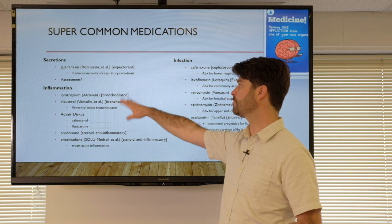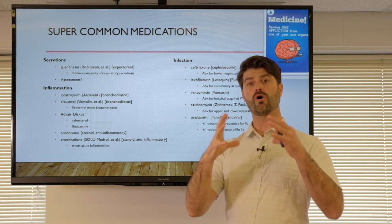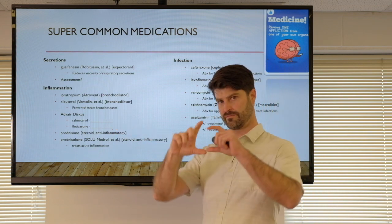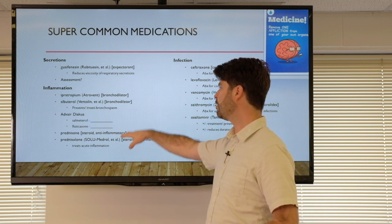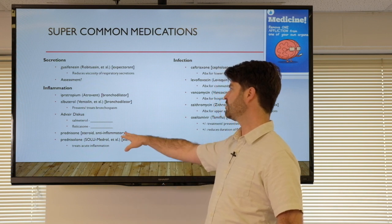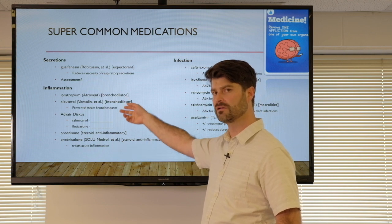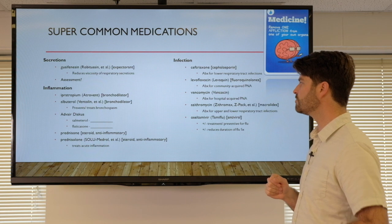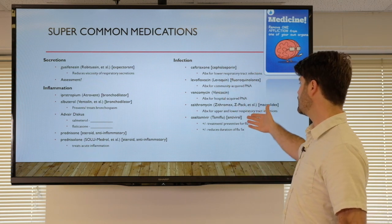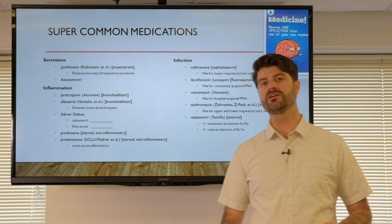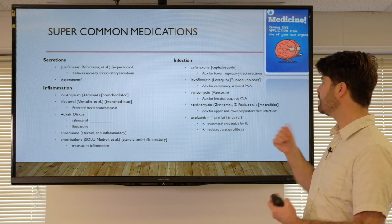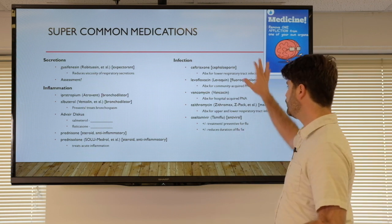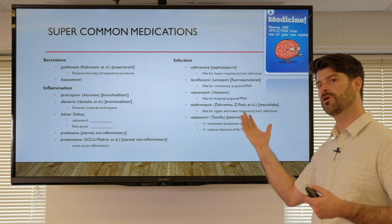For anti-inflammatories, we have a couple of options. Atrovent and Ventolin — albuterol and ipratropium — are bronchodilators that cause opening of the bronchioles so more air can pass through. Advair Diskus is a common inhaled combination product. Prednisone and prednisolone can be given orally or IV — these are steroids that reduce inflammation in the airway, not bronchodilators. For infection, we have antibiotics and antivirals depending on the presentation. When you see these medications around patients with respiratory disease, you can anticipate what's going on.